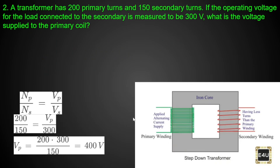The next question: a transformer has 200 primary turns and 150 secondary turns. The primary turns are 200 and secondary turns are 150. If the operating voltage for the load connected to the secondary is measured to be 300 volts, that is the output voltage of 300 volts.